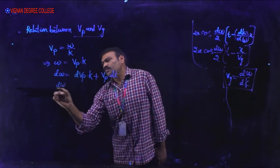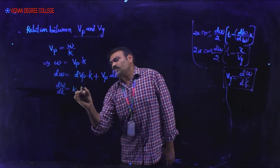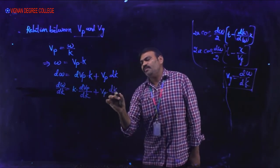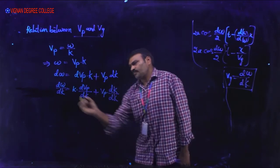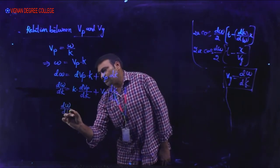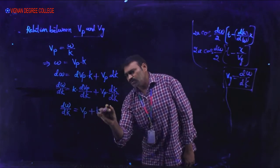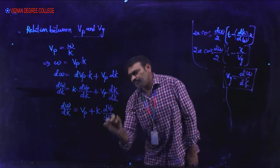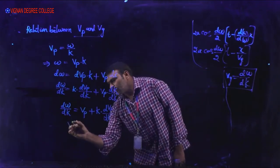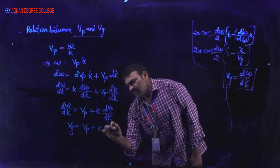Dividing by dk: dω/dk = k·(dV_P/dk) + V_P·(dk/dk). Since dk/dk = 1, we get dω/dk = V_P + k·(dV_P/dk). Since dω/dk is group velocity, we write: V_g = V_P + k·(dV_P/dk).